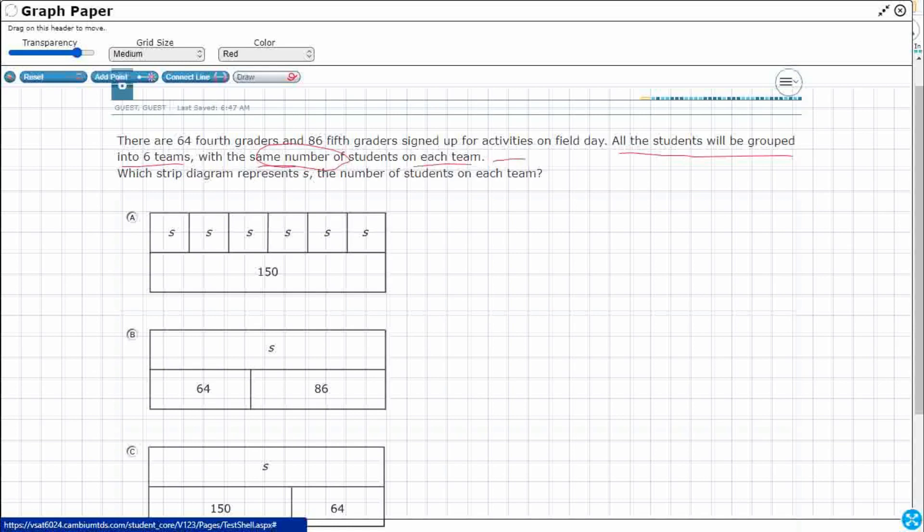So when you see that, you should get a little alert that says equal groups. Whenever you see anything that says the same number on each team or the same number in each group, or they give you the number in each group, equal groups lets us know that we need to multiply or we need to divide. Possibly both.